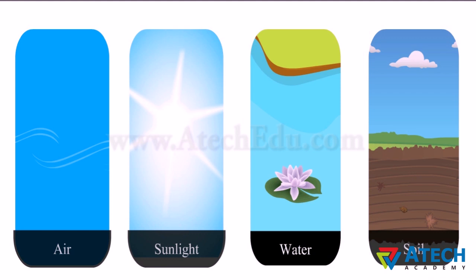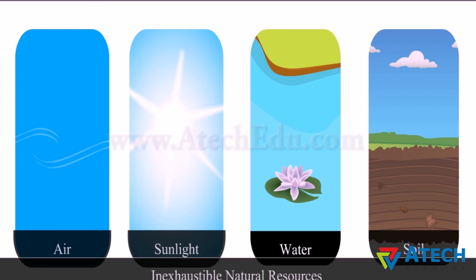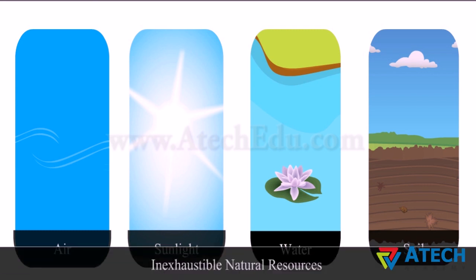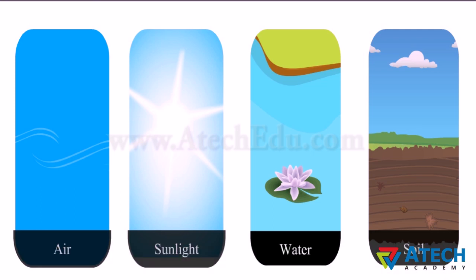Some natural resources are present in unlimited quantity in nature. They will not be exhausted by human activities. These are called inexhaustible natural resources. Examples are air, sunlight, water, and soil. These are called renewable resources because they will replace themselves over time when consumed by humans.